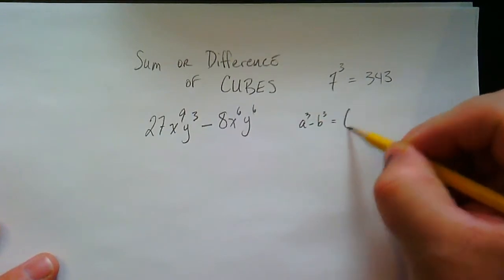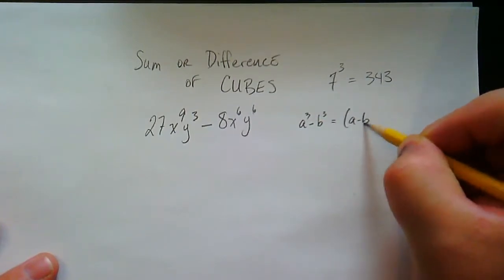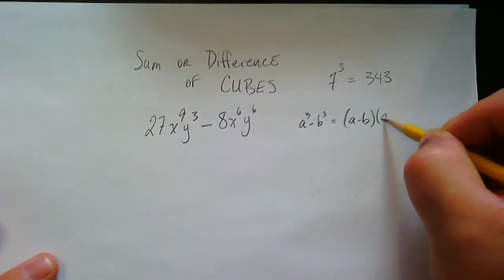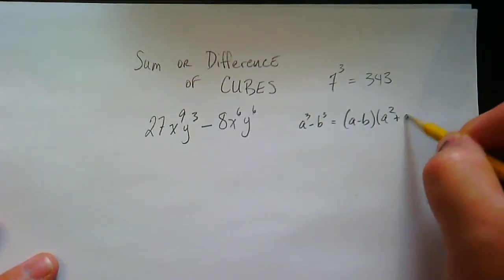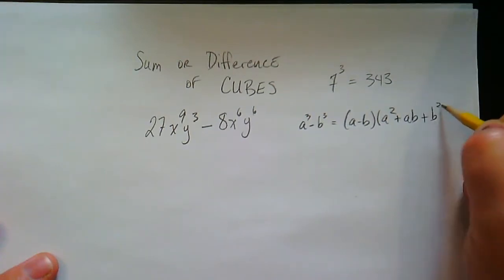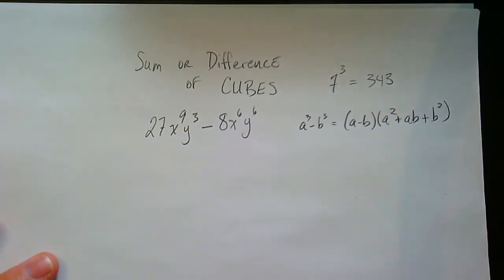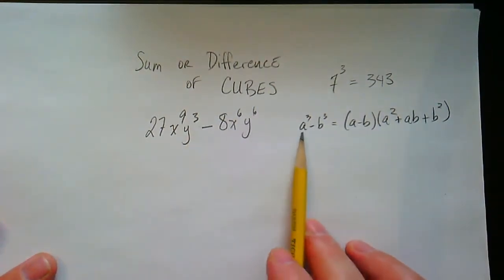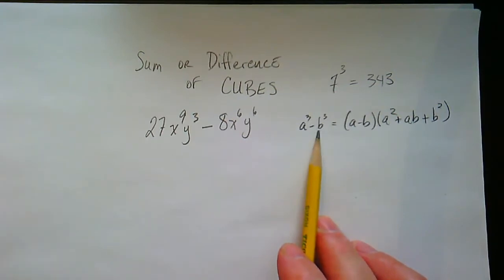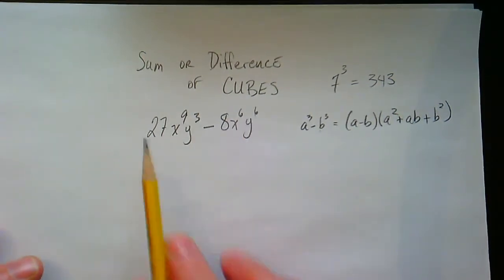The difference of cubes factors as (a minus b)(a squared plus ab plus b squared). That's our formula right there. So all we need to do is figure out what a and b are — that's all we got to do. That's the tricky part.